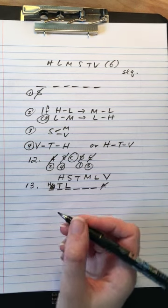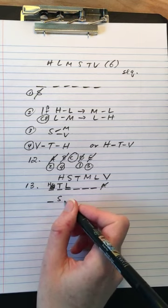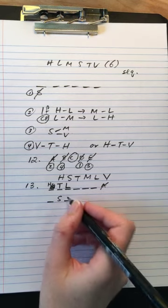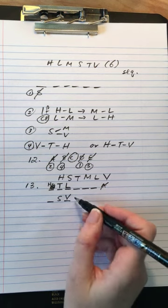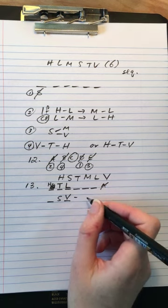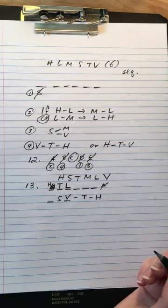Answer choice B: the sundial is auctioned on the second and the vase is auctioned on the third. So S is before V, that's fine. V has to be on one side of T and H, so we would have to have V before T before H.